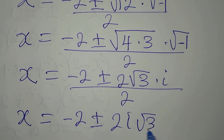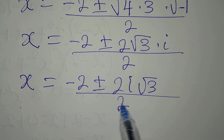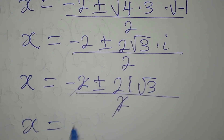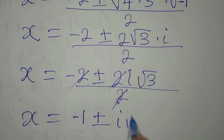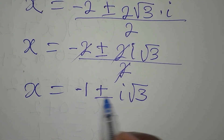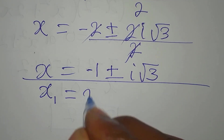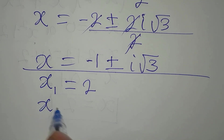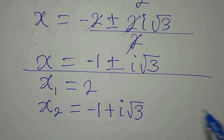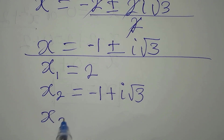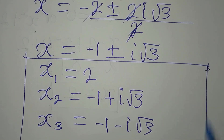Dividing everything by 2, x equals minus 1 plus or minus i root 3. This is a two-in-one solution. Bringing all three solutions together: x1 equals 2, x2 equals negative 1 plus i root 3, and x3 equals negative 1 minus i root 3. The equation has been completely solved.